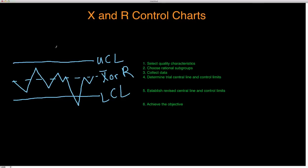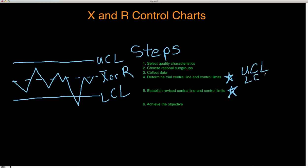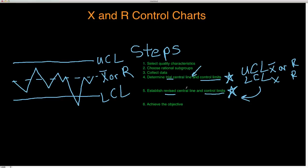In this video we will be going over how to construct X and R control charts. Here we have six steps that we are going to use to set up these control charts. Most of the work is within steps four and five, where there are several formulas we need to be aware of to get our control limits — for both the X control charts and the R charts — as well as the central lines.